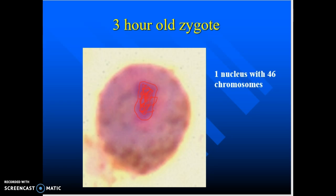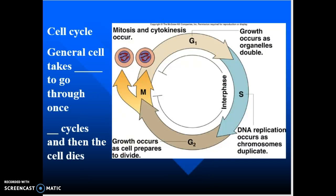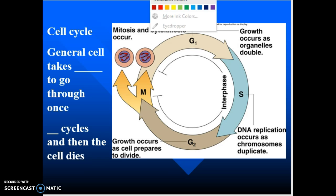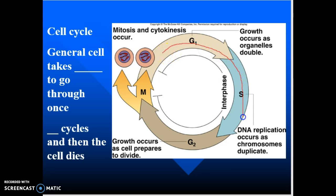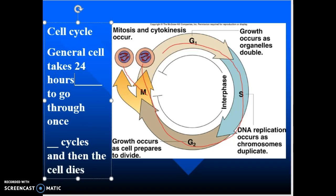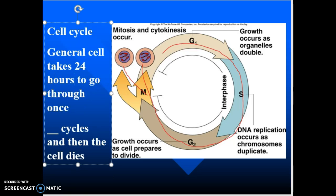The zygote is going to jump into a thing called the cell cycle. The cell cycle is a circle, and at the end you have two cells. Generally it takes about 24 hours for a cell to go through the cycle once — for skin, hair, muscle, and general body cells, about 24 hours. At the end you have two cells; 24 hours later you have four; 24 hours later eight. A cell will go through the cycle about 50 times and then that cell dies, leaving behind 50 copies of itself.